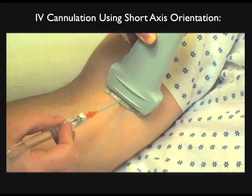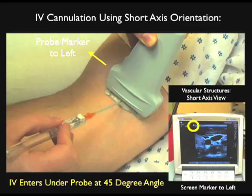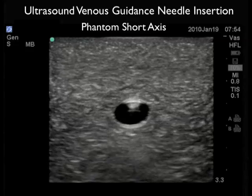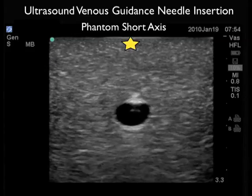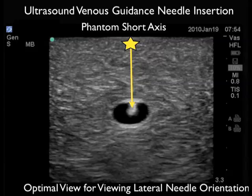Now we're ready to cannulate a vessel using ultrasound guidance. We'll begin using the short axis or side-to-side orientation of the probe, with the probe marker oriented towards the left as we stand in front of the patient. This will correlate with the ultrasound screen indicator dot towards the left of the screen. Generally, I want to place the IV at a 45-degree angle underneath the patient's skin and then place the probe over the area of the IV to guide it directly into the vein. Here we can see a target vessel and note the echogenic tip of the needle going through the anterior wall of the vessel and permeating into the vessel lumen. The short axis technique is optimal for viewing lateral needle orientation across the patient's arm.